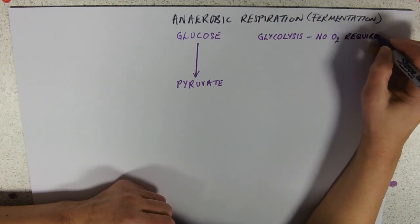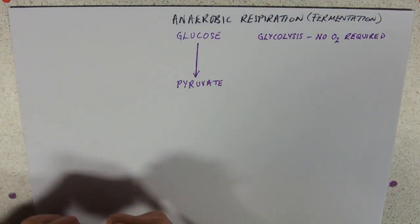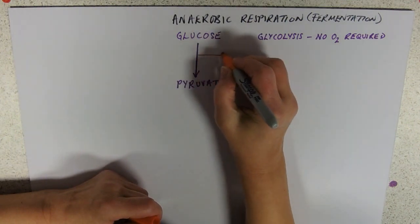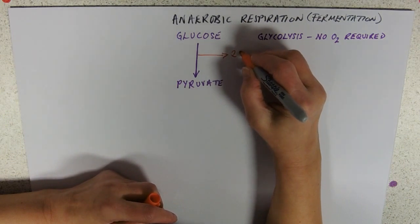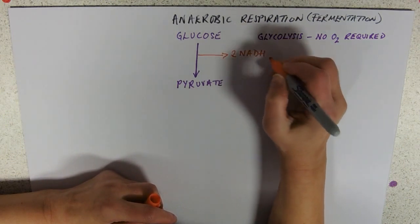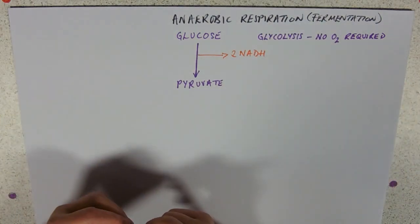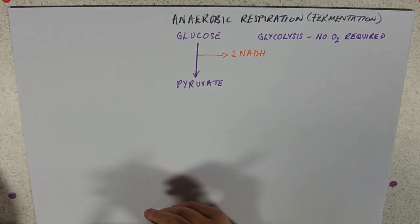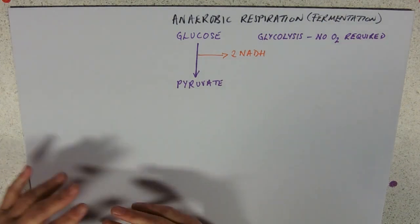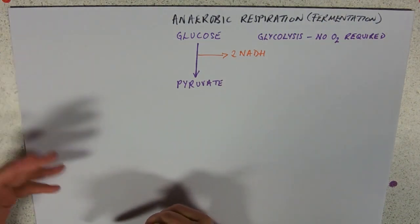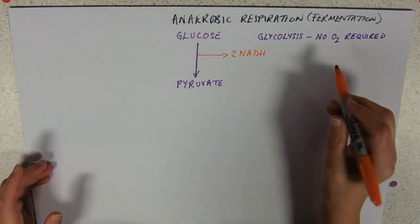Obviously, in glycolysis, we're producing reduced NAD, or NADH, and per molecule of glucose, glycolysis produces two NADH. Normally, they will go off to the electron transport chain, and each NADH entering will release an electron and a proton. The electron will go through the electron transport chain and pump protons across, and you'll get three ATP per NADH.